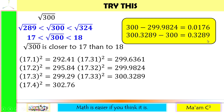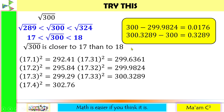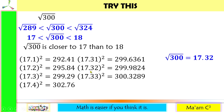The smaller difference is 0.0176. So it means the square root of 300 is equal to 17.32. Go ahead and check it in your calculator.